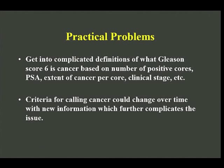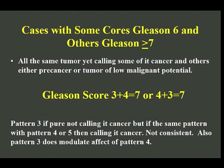Now the practical problems from a clinician-slash-pathologist perspective: if you're going to call Gleason 6 a low malignant potential tumor, you'd have to base it on number of positive cores, PSA, extent of cancer, and clinical stage — and those criteria could change over time. What do you do with a case where several cores are Gleason 6 and some are Gleason 7 or higher? Even more problematically, what do you do with a Gleason 3+4 or 4+3 equals 7? The 3 is part of our cancer grade. A premalignant lesion plus pattern 4 equals a Gleason 7? It just doesn't make sense.